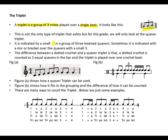It is indicated by a small 3, as I said, on a group of three beamed quavers. Sometimes it is indicated either with a slur or a bracket over the quavers with a small 3. So if you do not see a small 3 with a slur or a bracket, then that just means that it's three quavers. But if you see a small 3 on top of the beamed quavers, then it means it's a triplet.